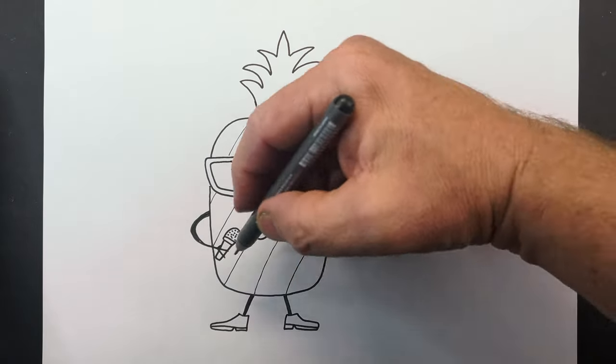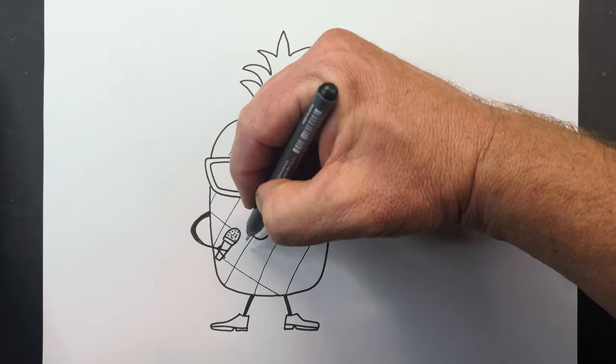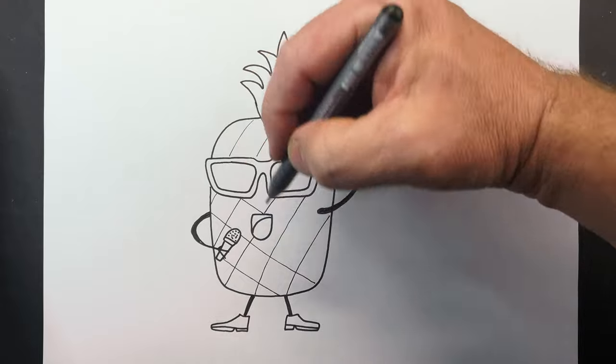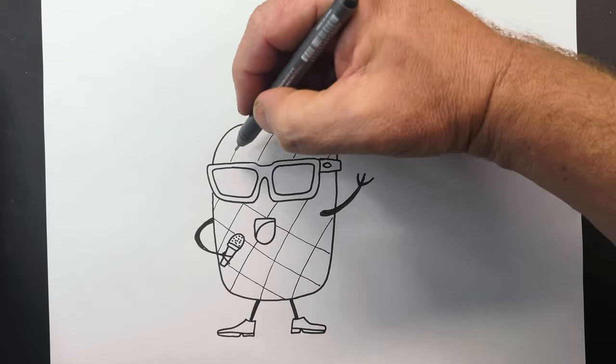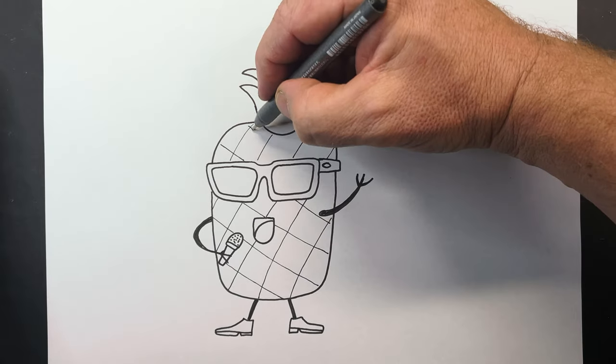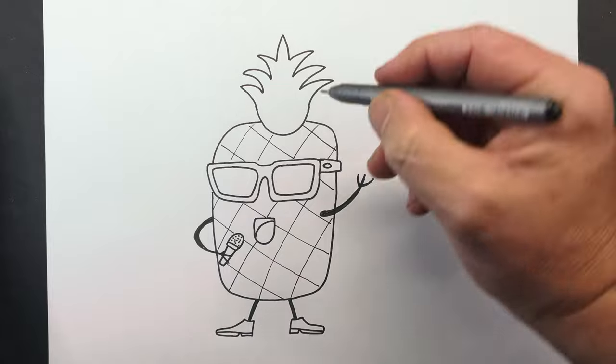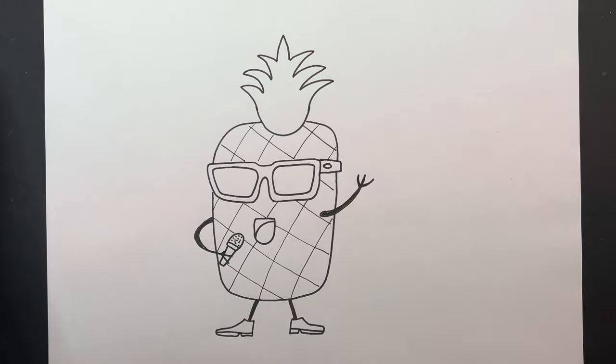And then I'm going to do the same coming the other way. So here. Try and keep that spacing pretty similar. There. There. There. And one more here. They're roughly one and a half centimeters apart. Thereabouts. Now there's our cute singing pineapple ready for some color. Here we go.